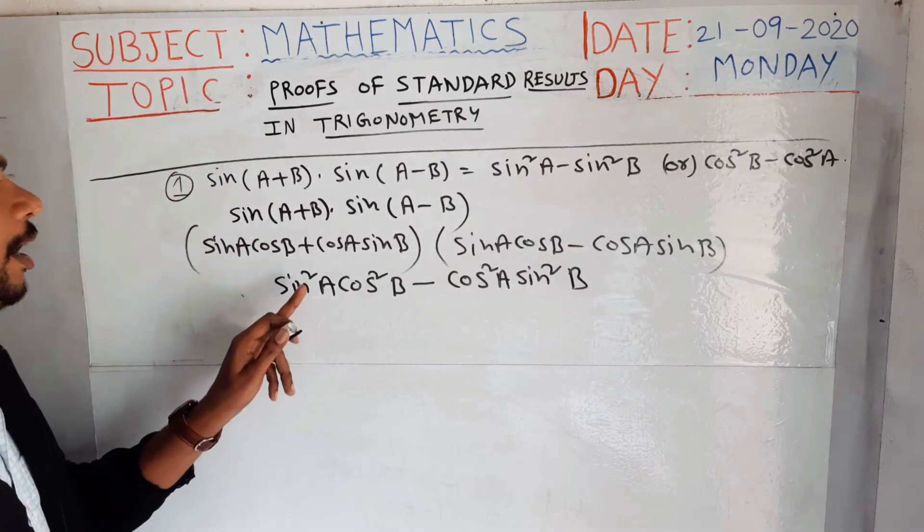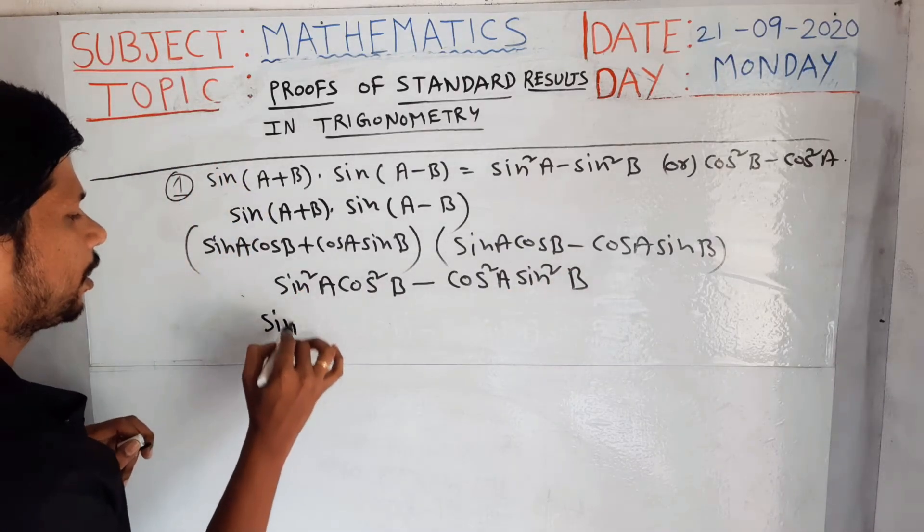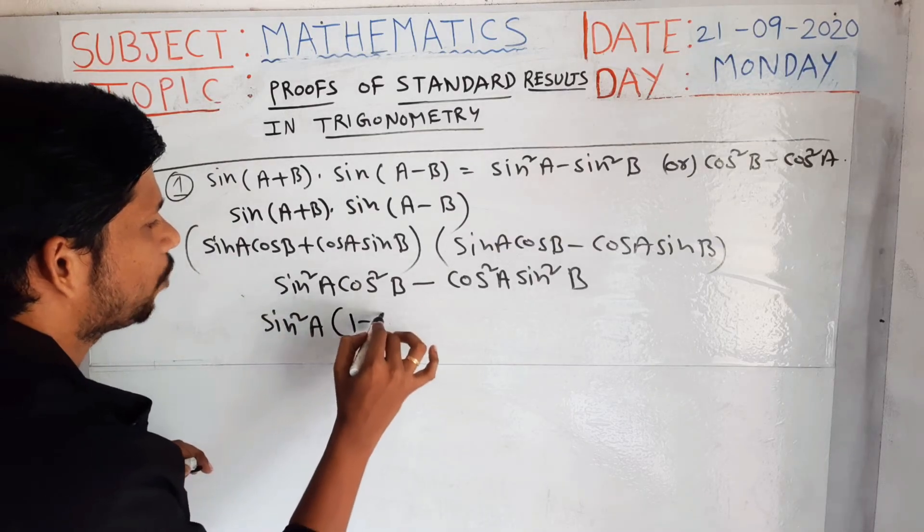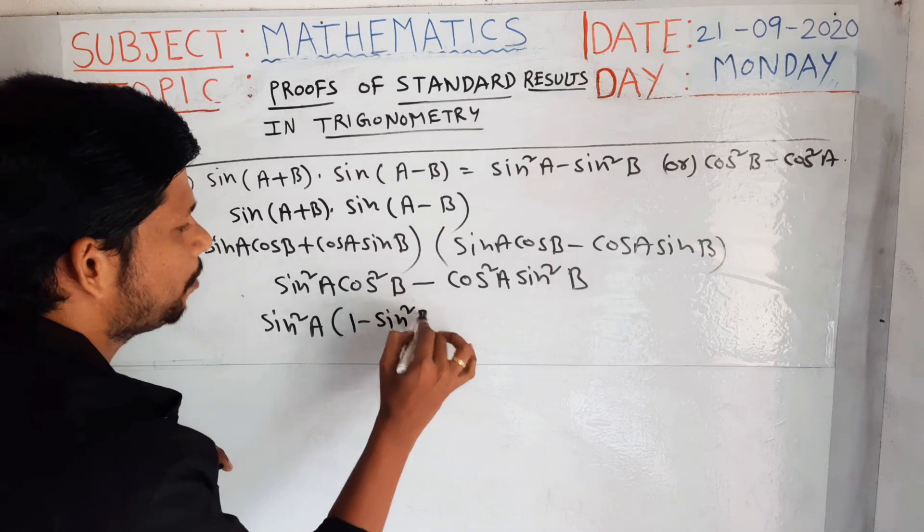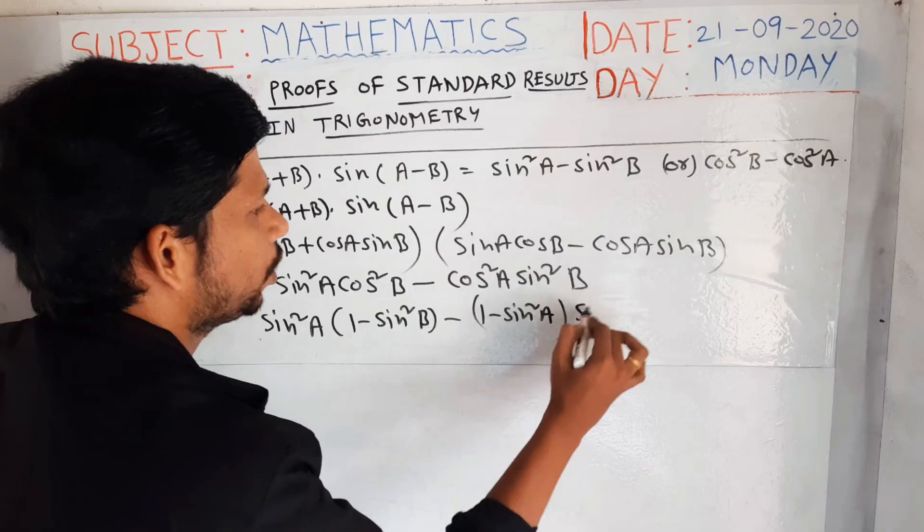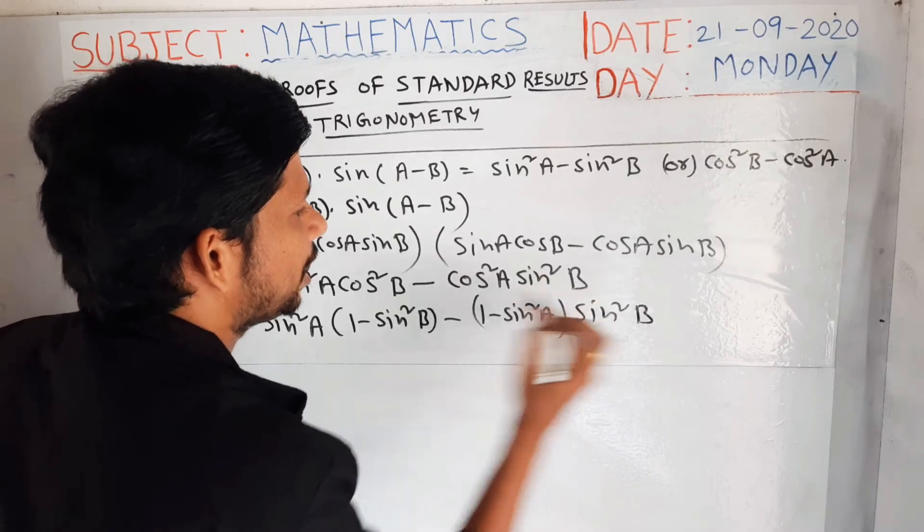So here I am converting all cosines in terms of sin. I can write this as sin²(a)(1 - sin²b) minus (1 - sin²a)sin²(b).